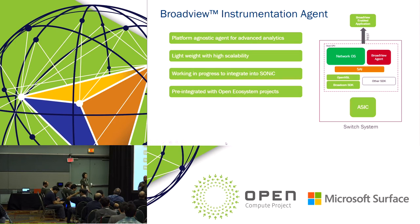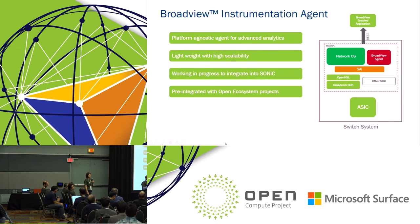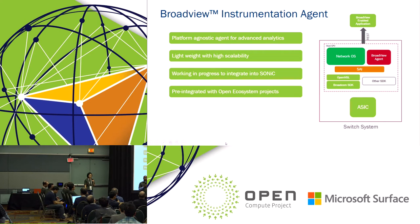In addition to the TAM proposal, we are also providing the Broadview agent — an instrumentation software suite that enables you to optimize your networks, do offline analysis, and network planning. The Broadview agent runs on top of SAI, leveraging the TAM API, and exports data using REST API to applications. REST is a very application-friendly interface, so applications can easily integrate with SONiC, which is what we are working on right now. Broadview also comes pre-integrated with open ecosystem projects: OpenDaylight, OpenStack, Ganglia, and recently AT&T CORD as well.